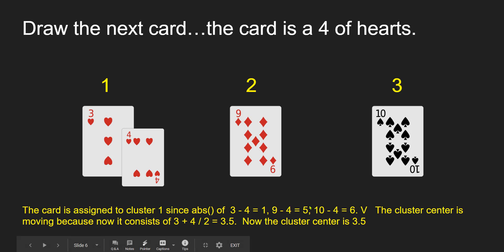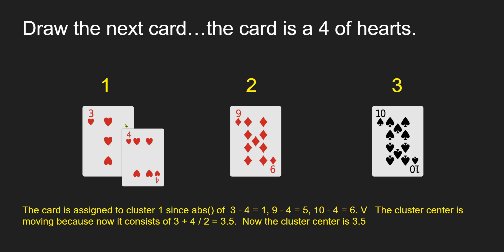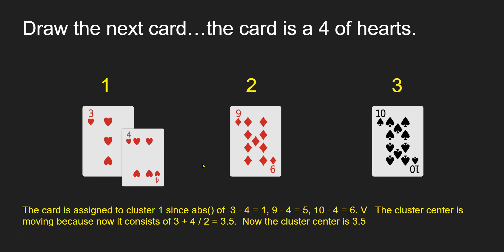Now, if we decide that we want the clusters to move every time we add a new observation, the cluster center moves. Three plus four divided by two — we take the average — gives 3.5. So now the cluster center isn't three, it's 3.5. It's moving.